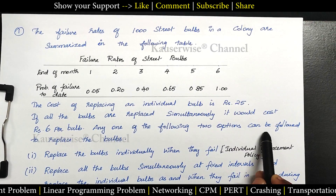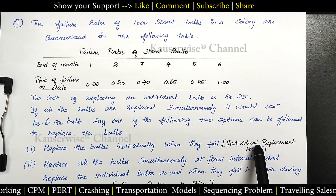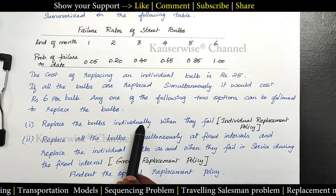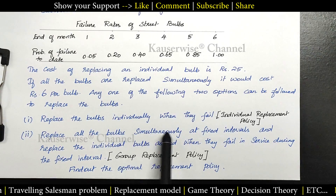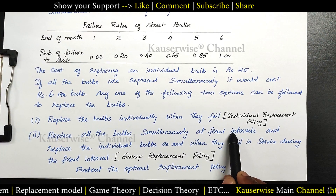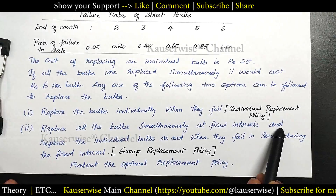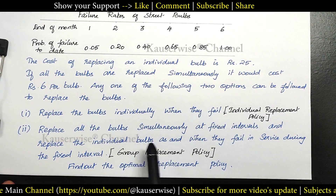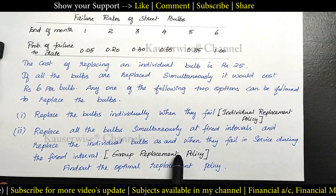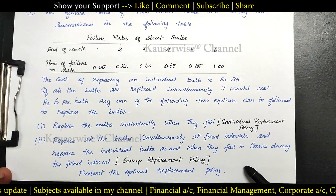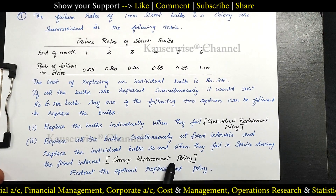Any one of the following two options can be followed to replace the bulbs. The first one is individual replacement policy — that is, replace the bulbs individually when they fail. The second one is group replacement policy — that is, replace all the bulbs simultaneously at a fixed interval, with the provision of also replacing individual bulbs as and when they fail in service during the fixed intervals. This is called group replacement policy. With this information, they are asking us to find out the optimal replacement policy.